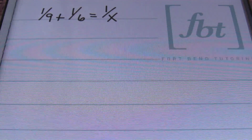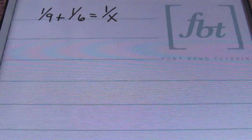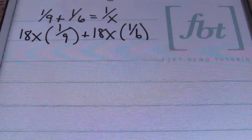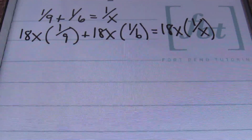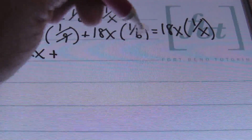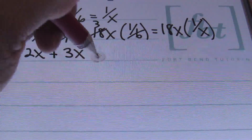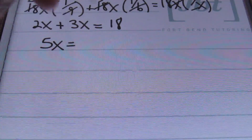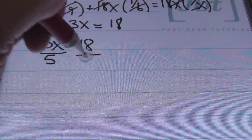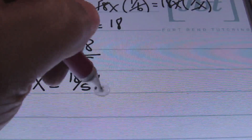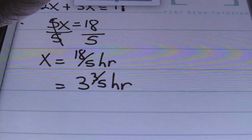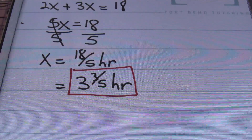To solve the equation, I'll multiply each term by the common denominator, which is 18X. This gives me 2X plus 3X equals 18. Combining like terms, 5X equals 18. Dividing both sides by 5, X equals 18 fifths hours — or in other words, 3 and 3 fifths hours. That's how long it will take Anna and Gloria to clean the house together.